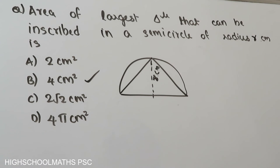Area of the largest triangle that can be inscribed in a semicircle of radius r.